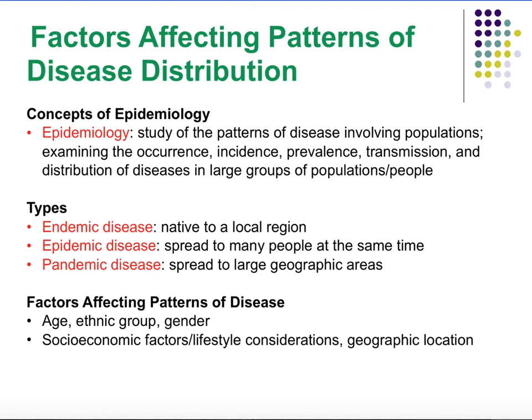We can talk about types of disease: endemic, epidemic, and pandemic. When a disease is at its endemic stage, that means it's native to a local region. Once it starts spreading to many people at the same time, we have an epidemic. And then if it starts to spread to large geographic areas, that's when we get into a pandemic.